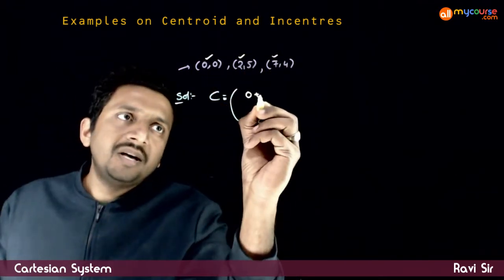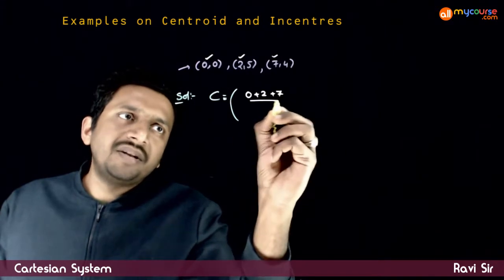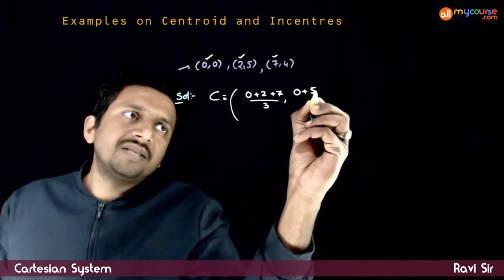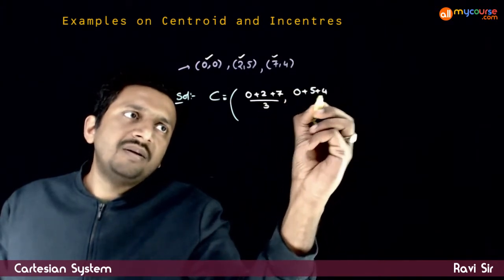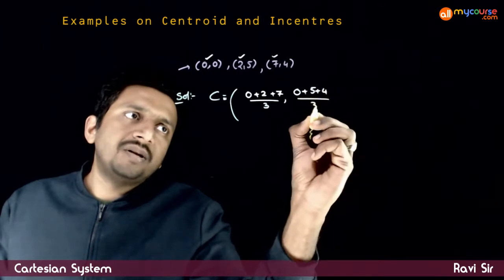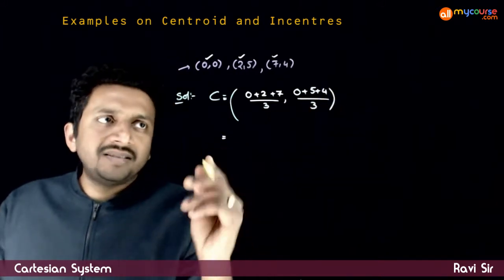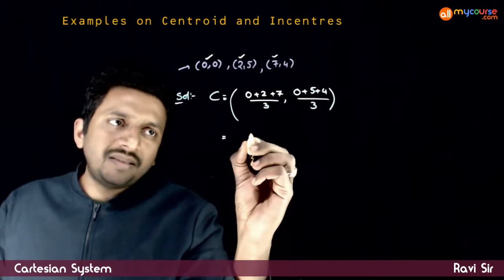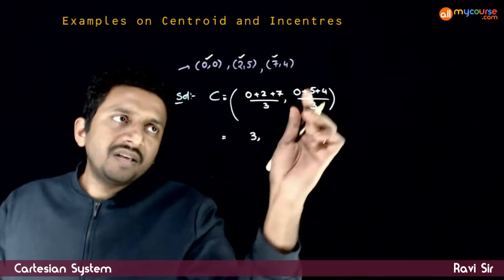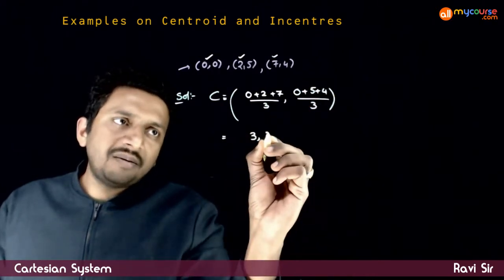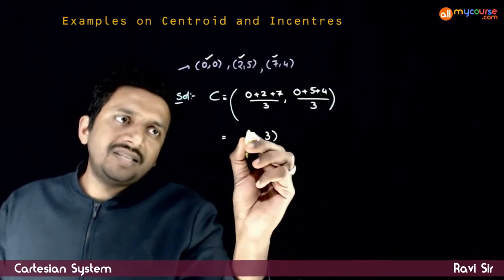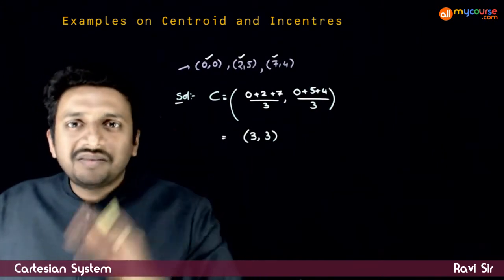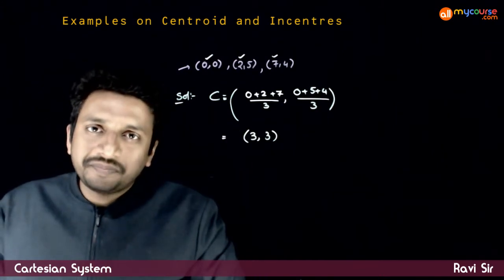That is 0 plus 2 plus 7 by 3, and 0 plus 5 plus 4 by 3. That is equal to 7 plus 2 is 9 by 3, which is 3. And 5 plus 4 is 9 by 3, which is again equal to 3. So the centroid is (3, 3). Thank you.